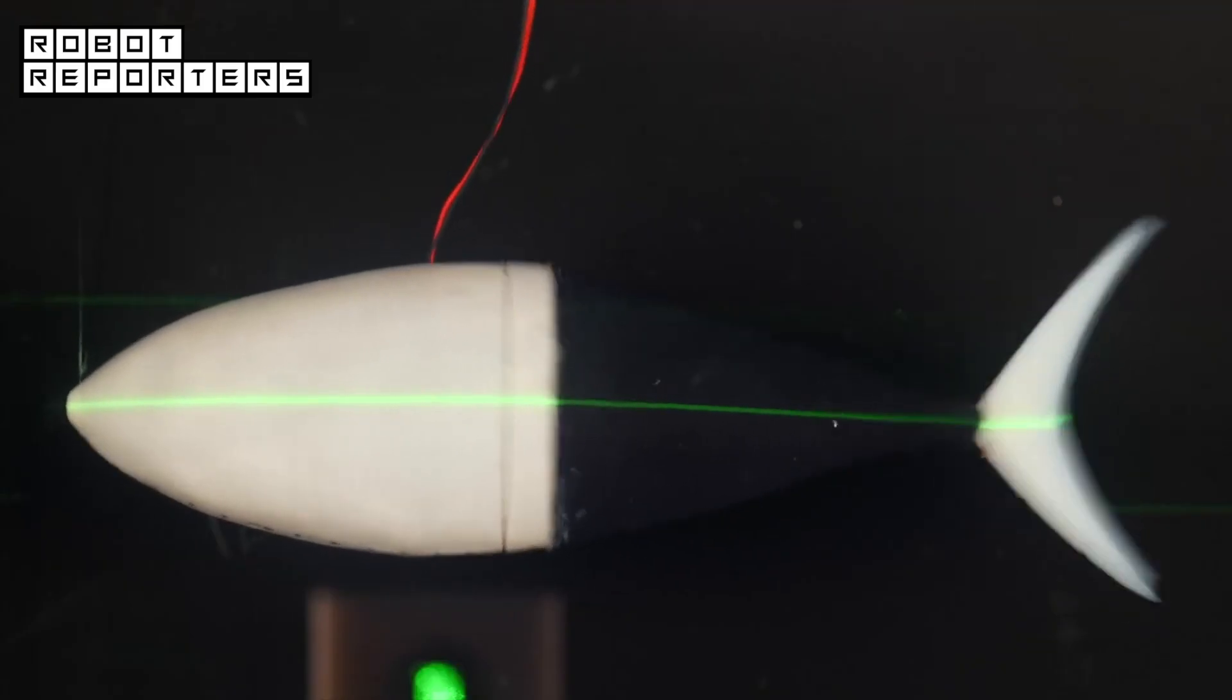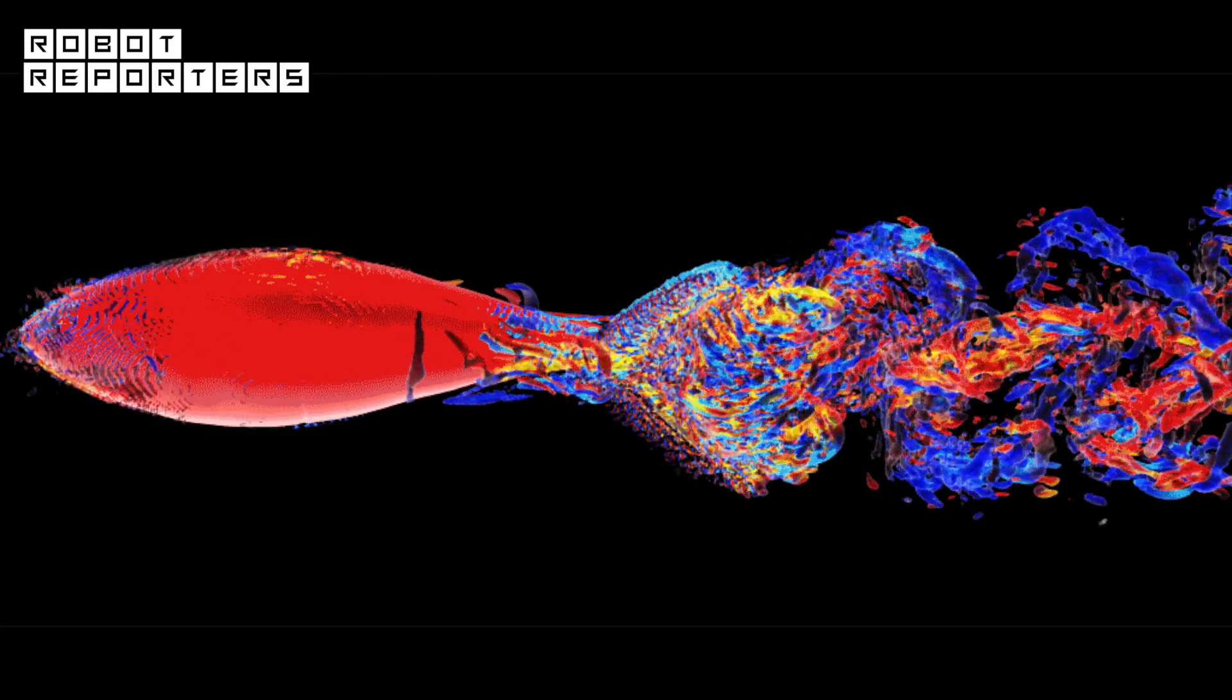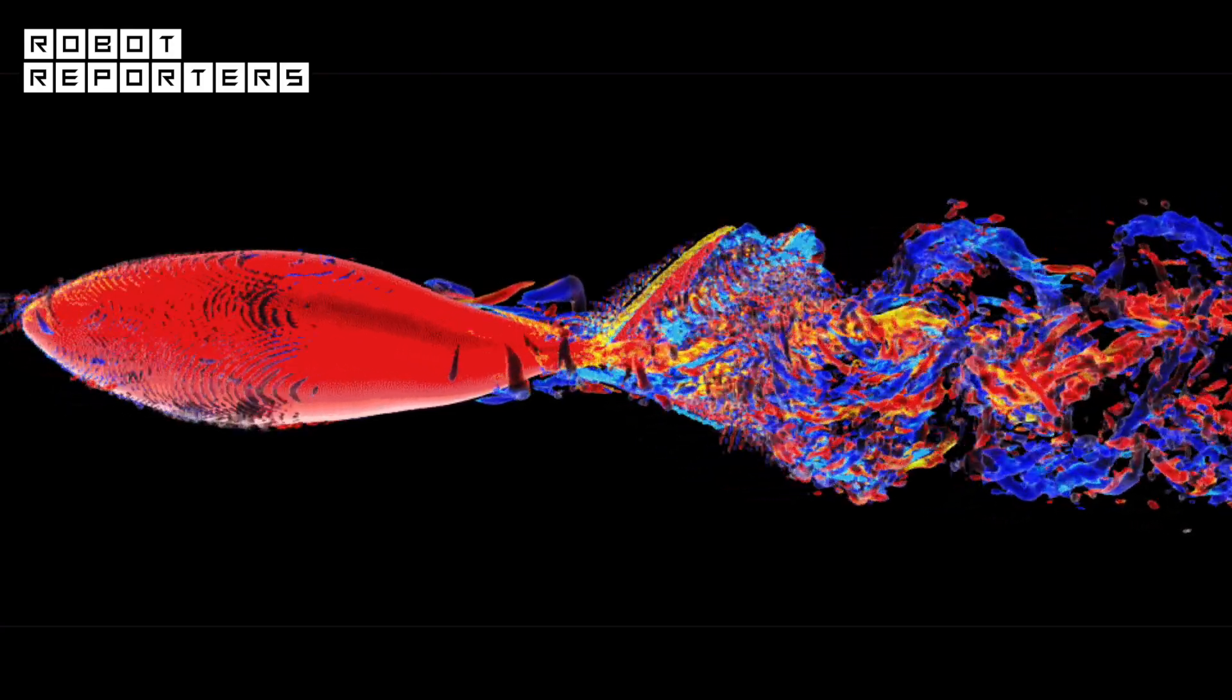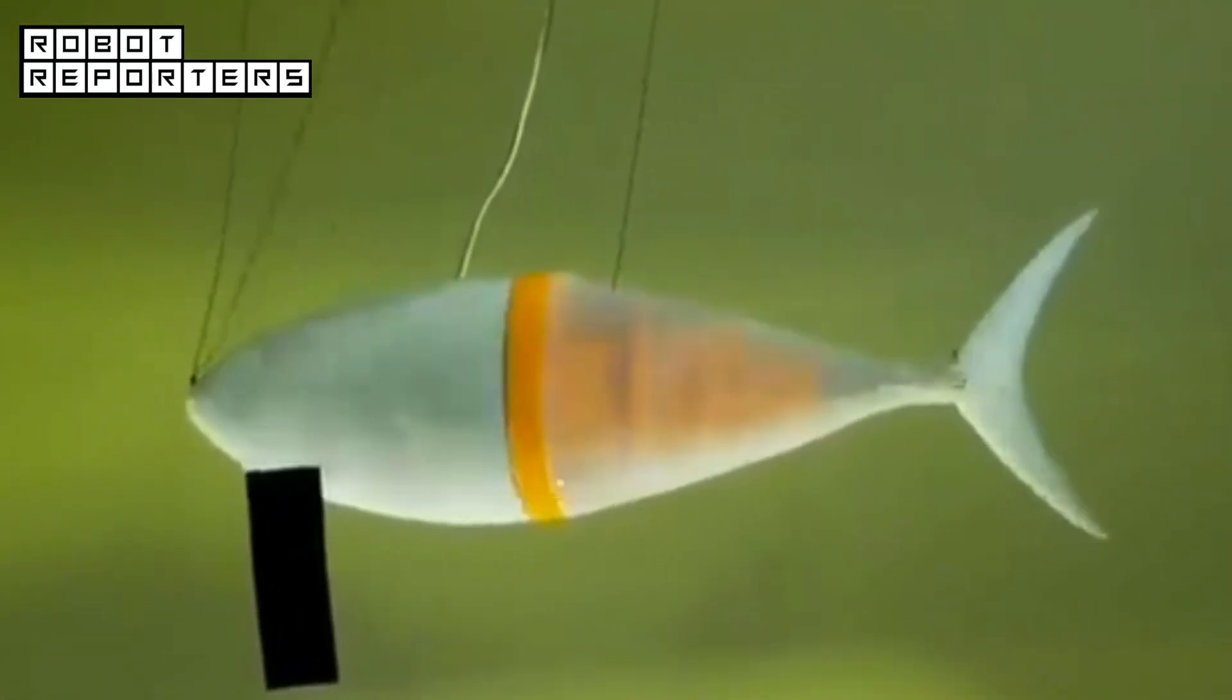The project is called Tunabot. The aim of the project is to better understand the physics of fish propulsion, research that could help development of the next generation of underwater vehicles, driven by fish-like systems instead of propellers.